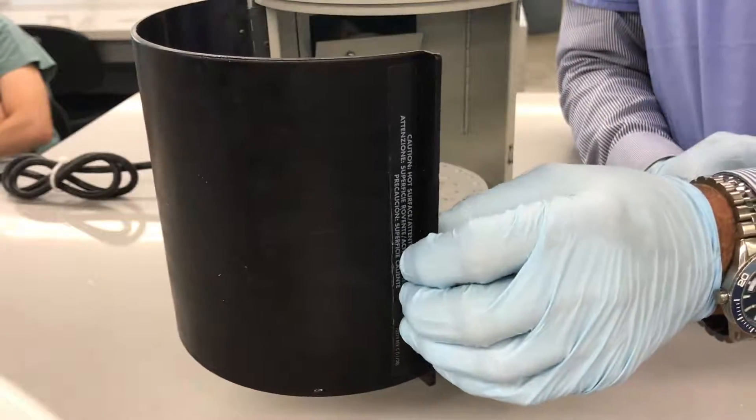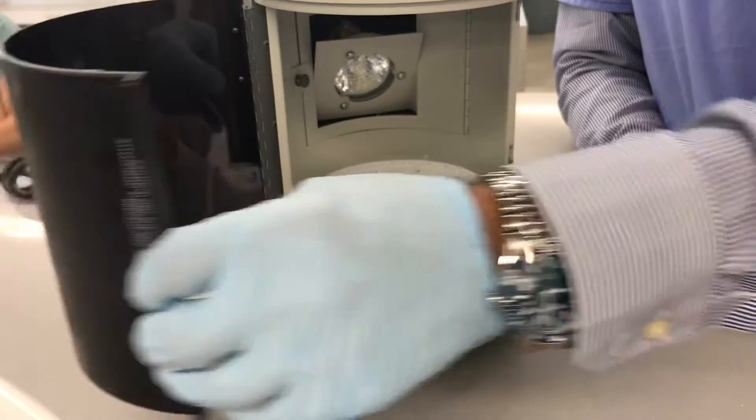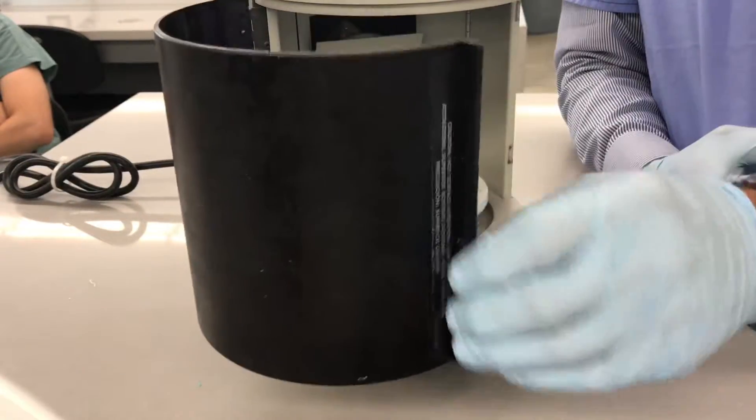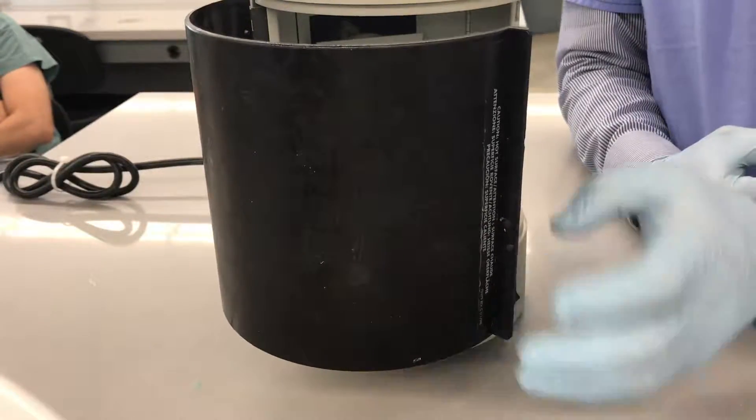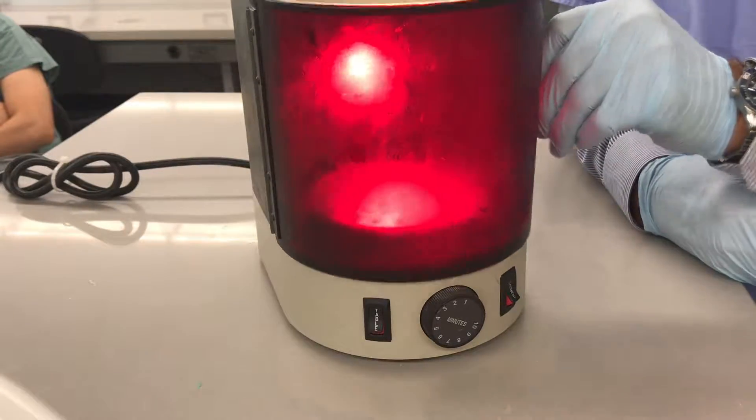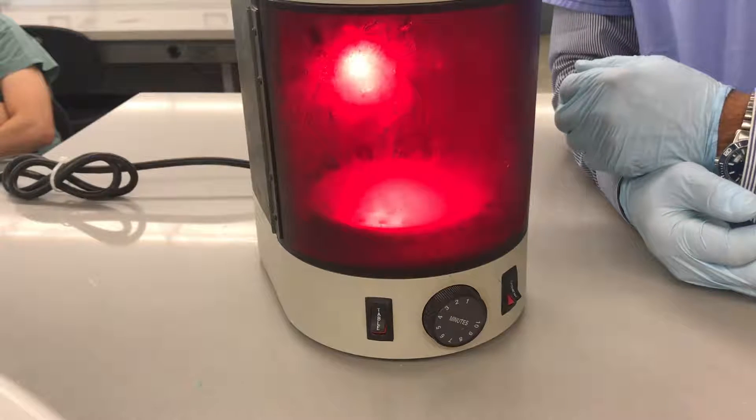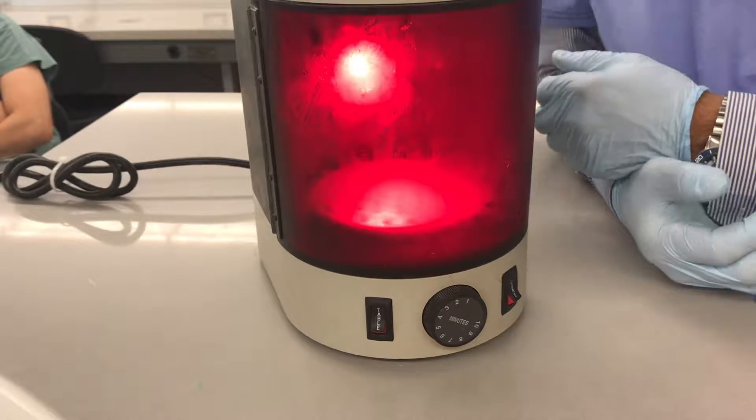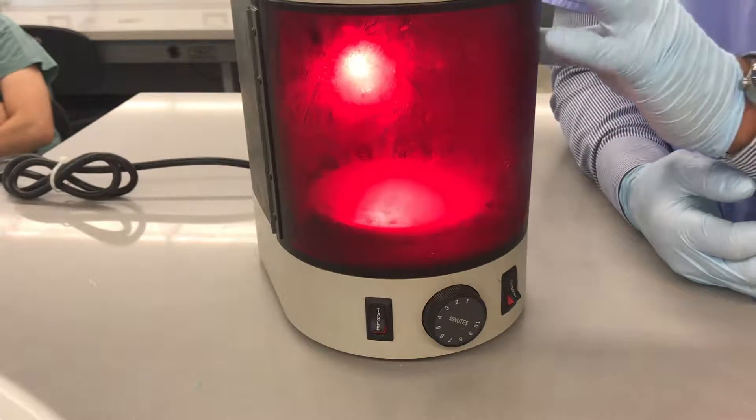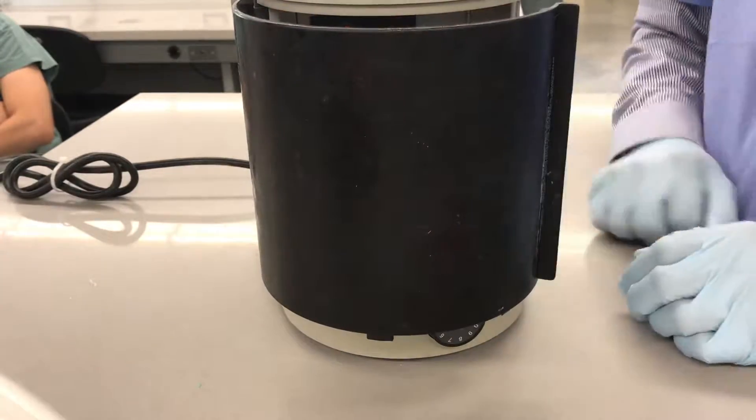To reset the timer, every time you open the door, the timer resets. So if you were at two minutes and you open the door after 30 seconds, you close the door, the timer will reset. As a good measure, just to make sure that it does, I turn it off.